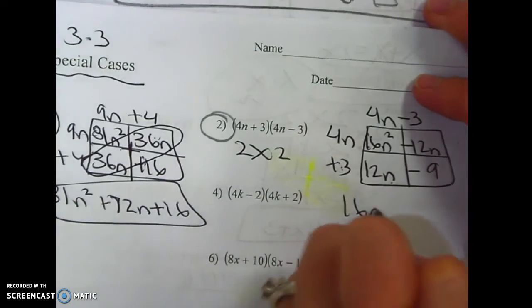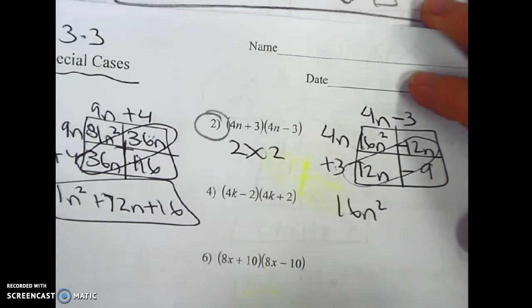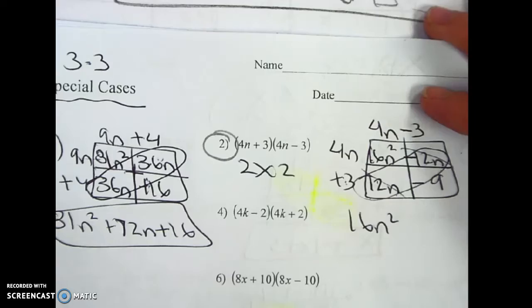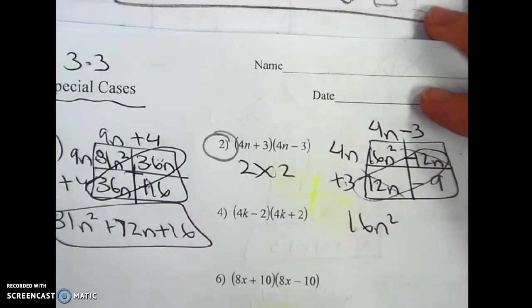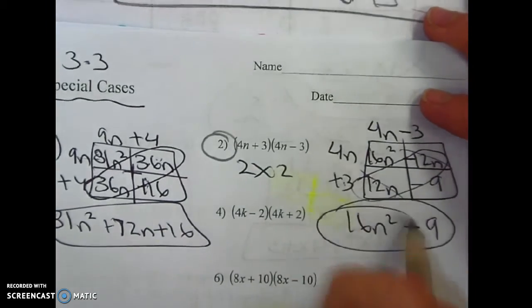Bring down the first one. Put the diagonals together. 12 minus 12 is gone. So if they're opposites, it's like you're taking it away. 3 and negative 3, 0. And so it's just a binomial.